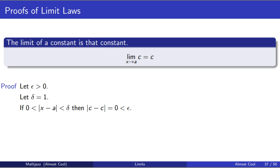So then we try and prove the implication inside of the definition of limit. If zero is less than the absolute value of x minus a is less than delta, then we have to prove that the absolute value of f of x minus l is less than epsilon. It turns out that it didn't matter what we chose for delta. Delta doesn't affect f of x minus l, because f of x is c, and l is c, and c minus c is zero. Since epsilon is a positive number, and zero is less than any positive number, we know that the absolute value of f minus l is less than epsilon. So that proves that the limit of a constant is that constant.